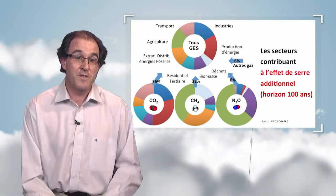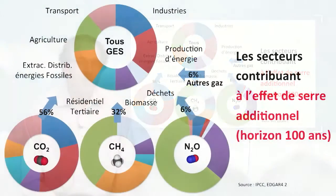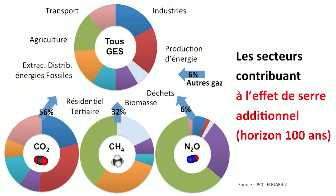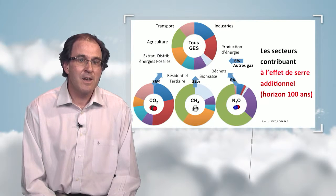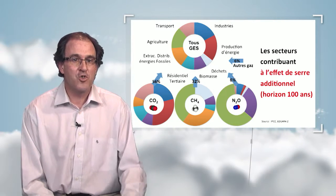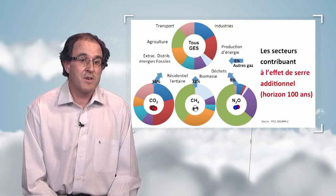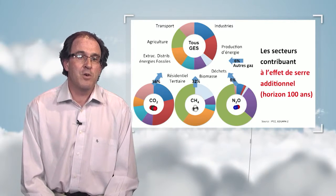Looking at the graph again with GWP-equivalent contributions, the pie chart changes. Combustion sectors represent a smaller share, and we now have other sectors such as agriculture, which produces methane, extraction and distribution of fossil fuels, biomass, and waste management. In CO₂-equivalent terms, CO₂ now represents 56%, methane 32%, and other gases 6% each. The take-home message is that to reduce greenhouse effect gases and address climate change, we should not look only at CO₂ but also at other gases and the industries that produce them — which is not limited to fossil fuel combustion.